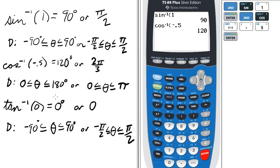Again we have a domain restriction with arc cosine or inverse cosine. It usually spans from 0 to 180 degrees for theta, or theta is between 0 and pi radians.